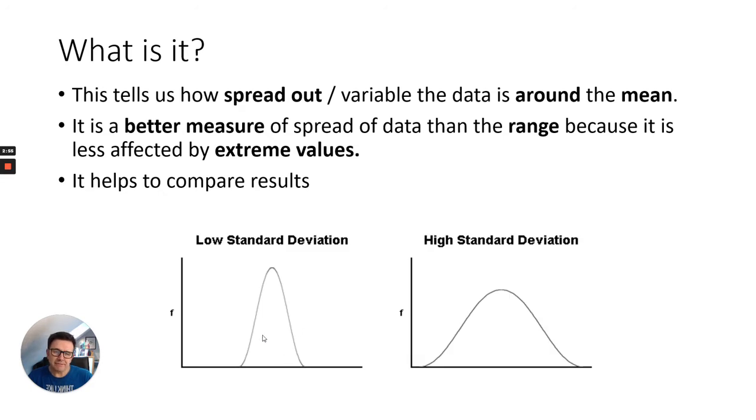So, for example, here in the first graph here, I've got a low standard deviation. So this would suggest that the data is less spread out and less variable. Whereas a high standard deviation, a higher standard deviation means that it's much more spread out the data and therefore probably isn't as reliable.